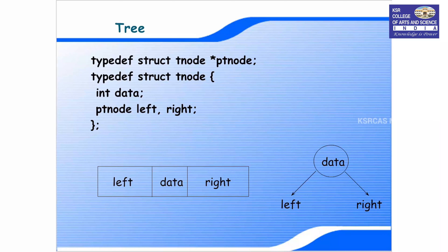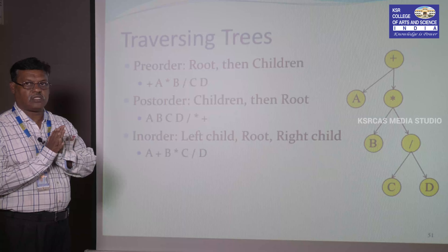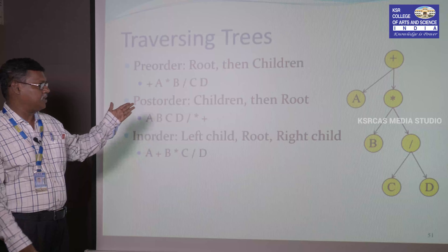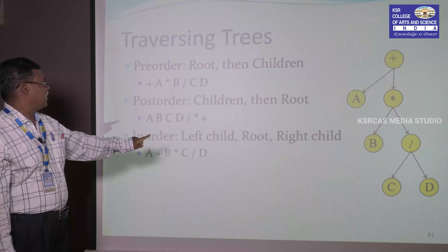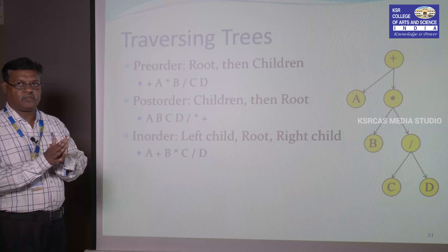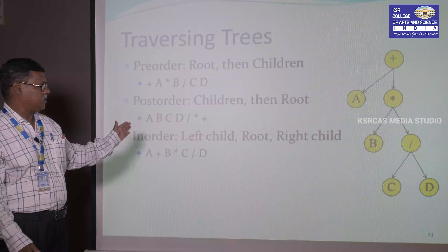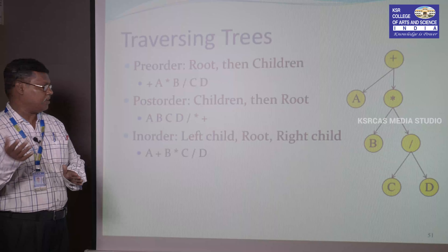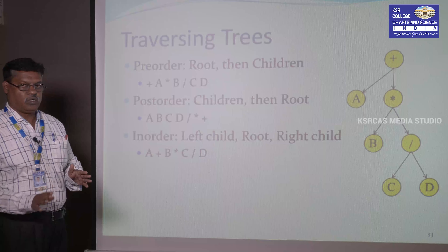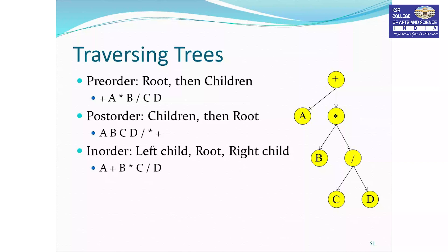Traversing a tree means visiting all nodes exactly once. There are three ways to traverse: pre-order (visit root, then left subtree, then right subtree), post-order (visit left subtree, then right subtree, then root), and in-order (visit left subtree, then root, then right subtree).